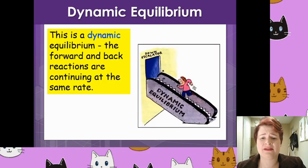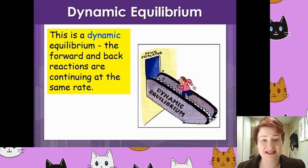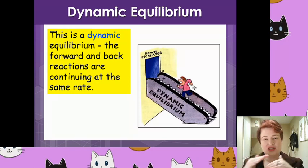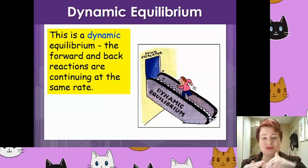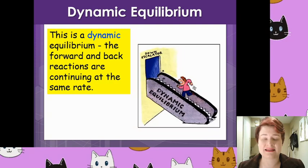A silly way to think about this: someone trying to get up an escalator really quickly. If you sprint up an escalator you might make it if your speed is fast enough. However, in this example the person is running up at the same rate the escalator is going downwards. So if no other factor changes, there is no net movement overall, because the rate going down is the same as the rate going up.